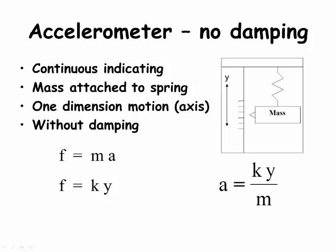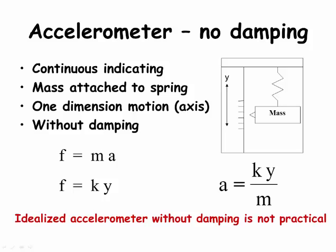The accelerometer has a mass attached to a spring. To simplify the problem, we will assume only vertical motion. As the acceleration acting on the mass changes, the position of the mass moves and its position on the vertical y-axis is indicated. The first force equation is for gravity: force equals mass times acceleration. The second is for the spring: force equals spring constant k times position y. Equating and solving gives a equals k times y over m. This equation is idealized — without damping or friction, the mass would continue to move indefinitely due to an initial change in acceleration.